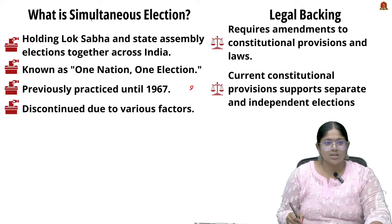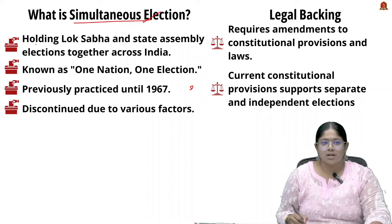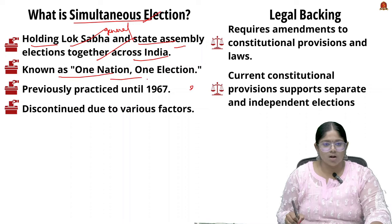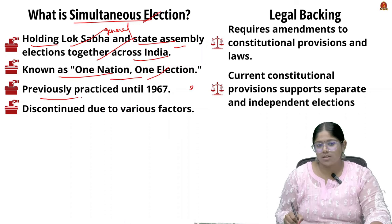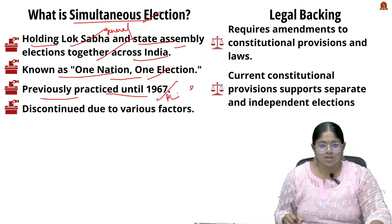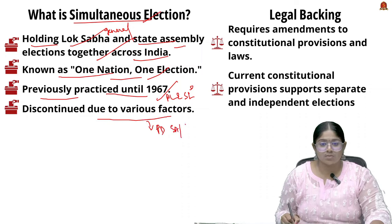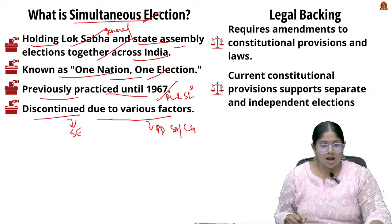Simultaneous election is nothing but holding Lok Sabha or general elections and state assembly elections together across India at the same time — known as One Nation One Election. Previously, this was practiced until 1967, where both parliament and state elections were conducted together. However, due to factors like premature dissolutions of state assemblies and central governments, simultaneous elections were discontinued and have been staggered since.